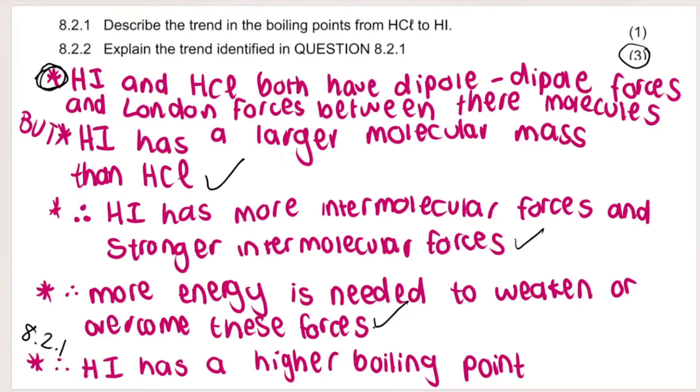And because it has stronger intermolecular forces, more energy is needed to weaken or overcome these forces. Now this last point you don't have to repeat, because you already mentioned this in 8.2.1, the fact that HI has a higher boiling point. So it's basically those three ticks over there. But as I said, the first bullet point is always good to mention. Especially as you go up to matric, they want to see that in your answer.